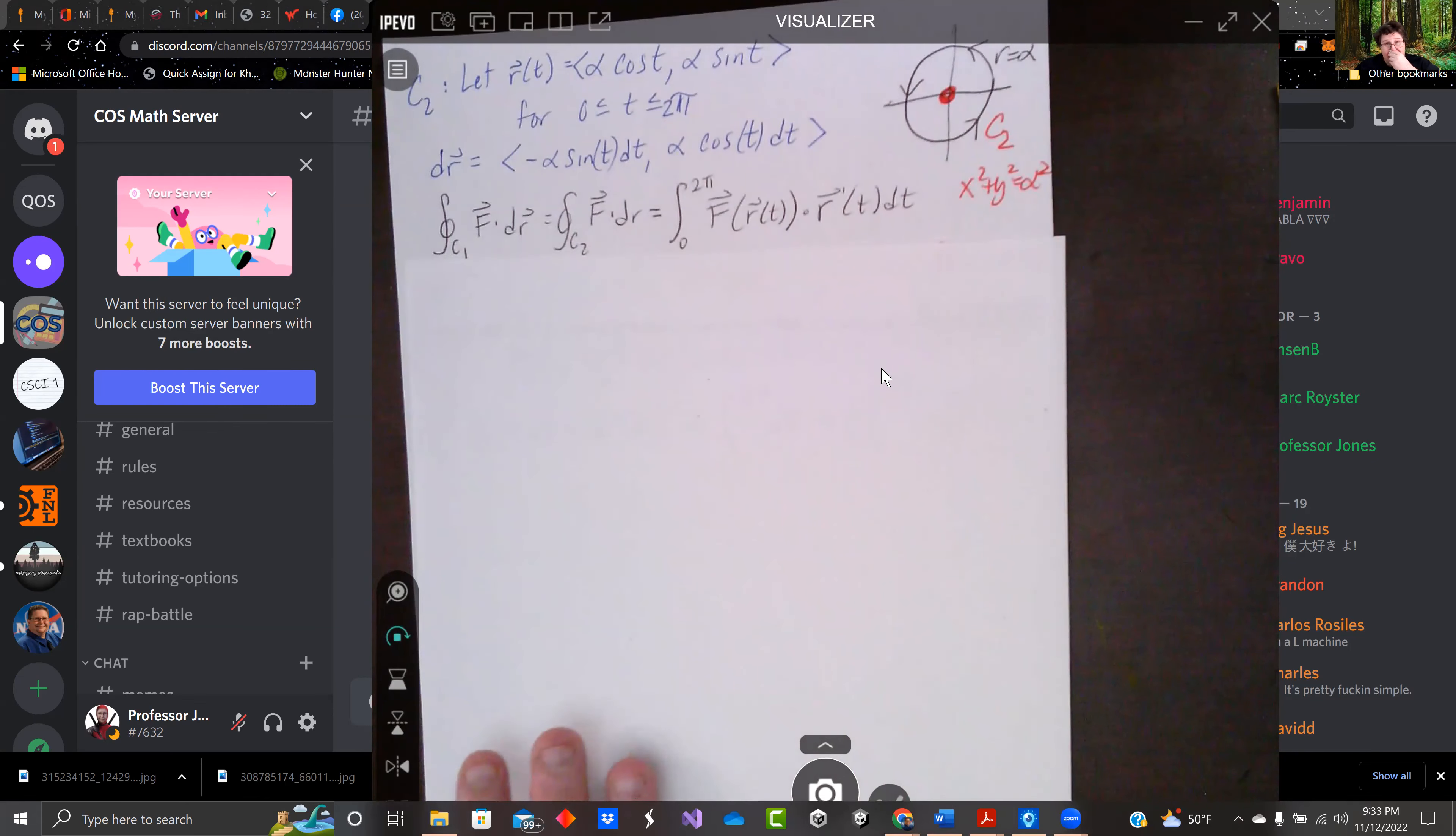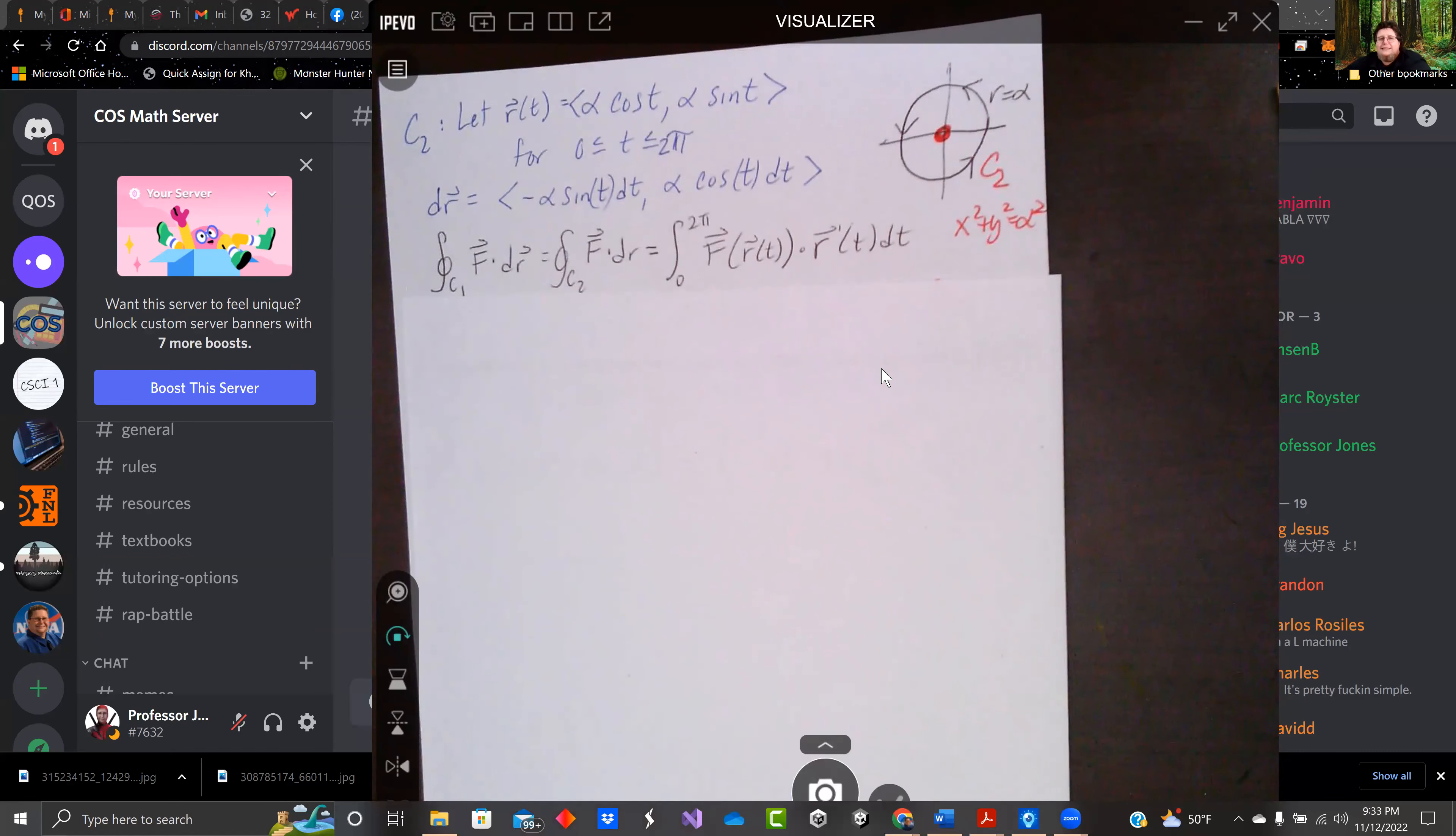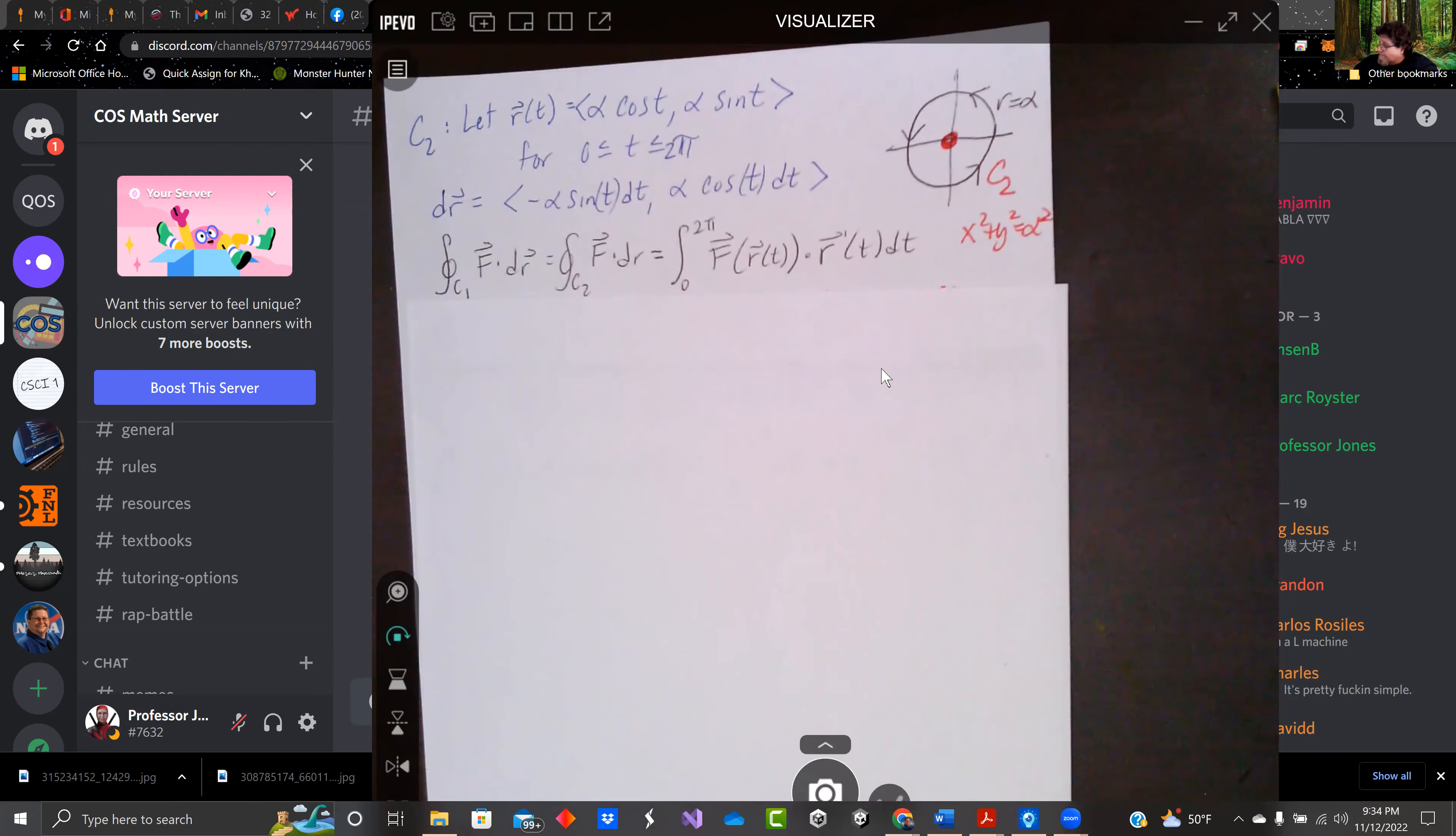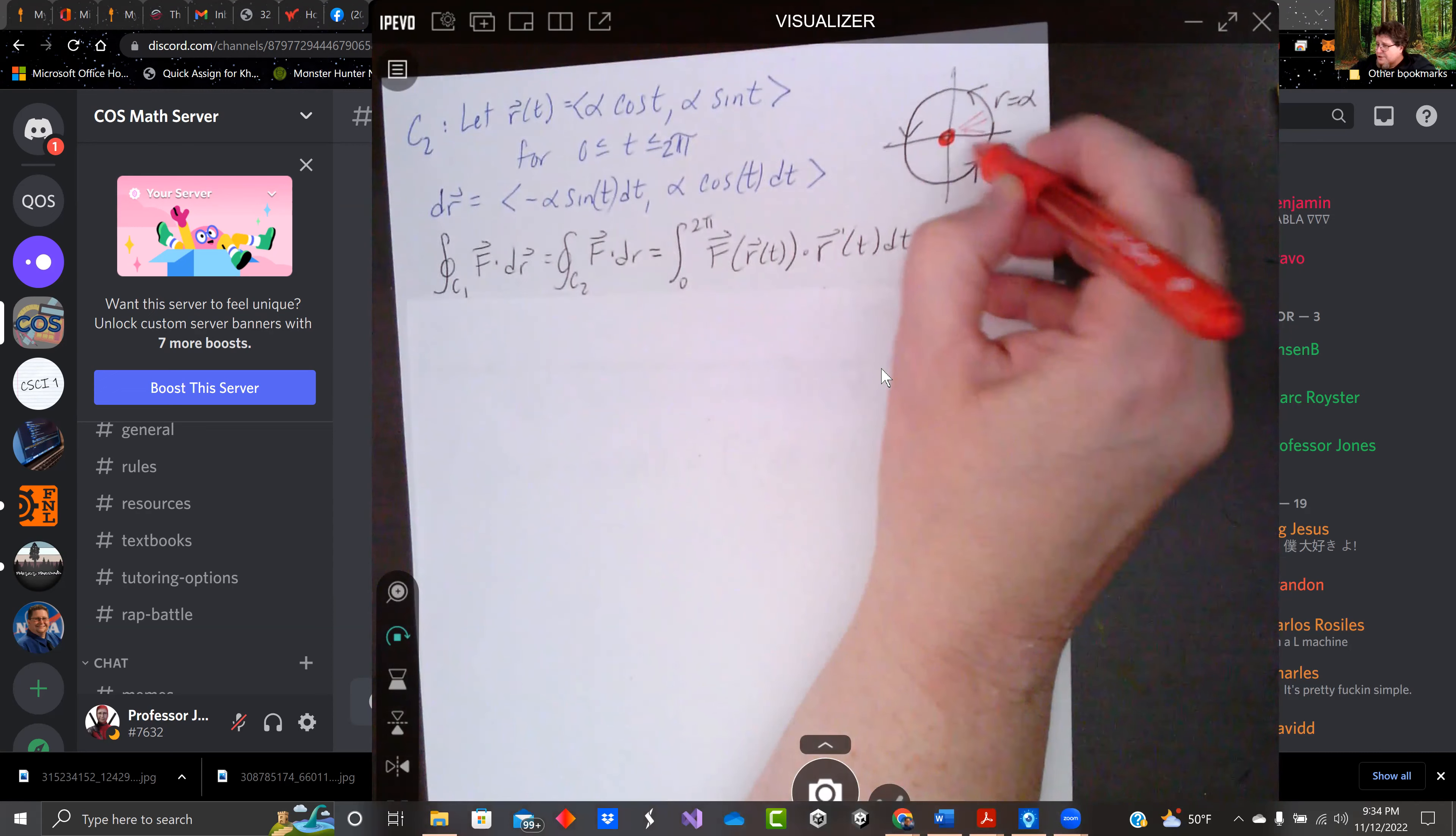So we've got our circle of radius alpha. We're going to let r(t) equal alpha cosine t and alpha sine t for our x and y components. t is our angle, so it's going from zero to 2π. And this is also a region around the origin, the way we've got it written.